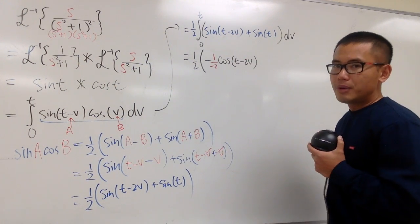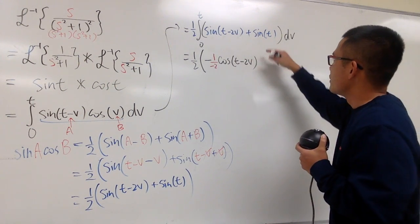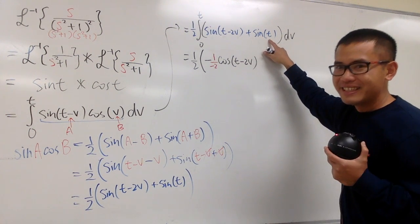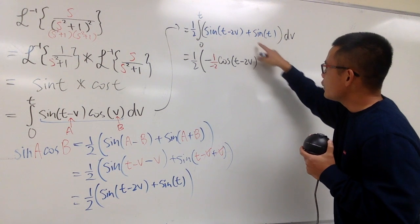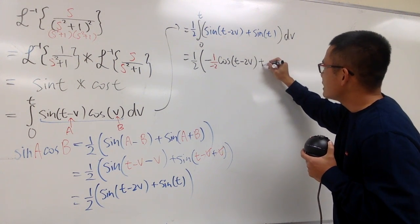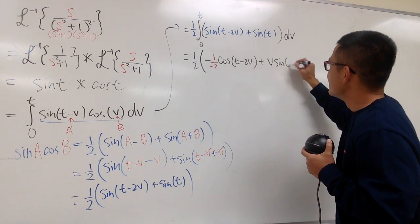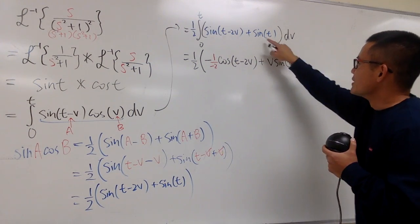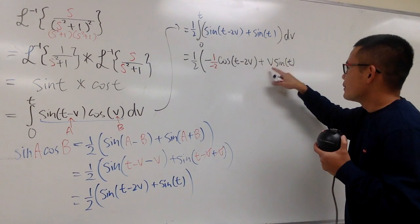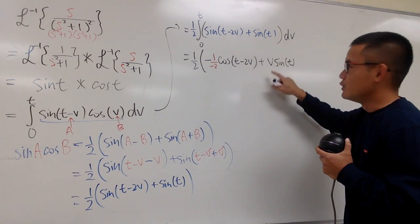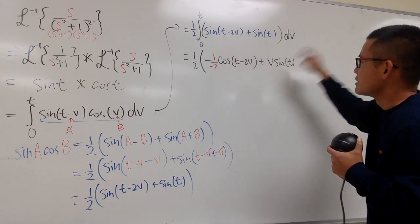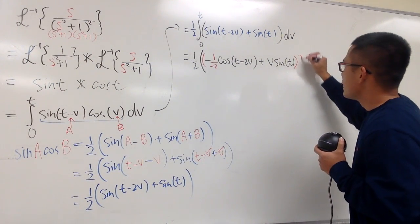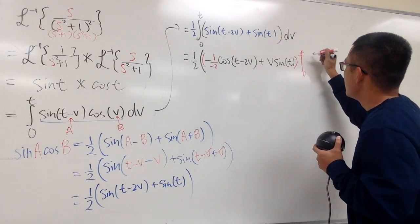That's the first integration part. The second term, sine t, is a constant in the v world. When you integrate it, you get plus v·sine t. Now we have to plug in 0 and t as the bounds.